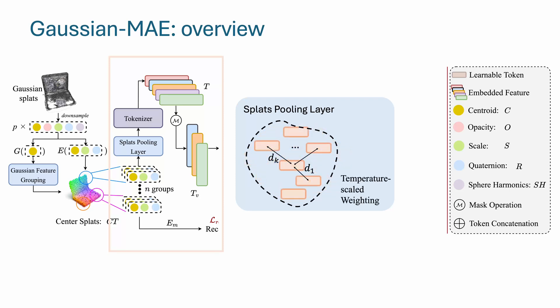we project Gaussian parameters to its intermediate feature and then use a temperature-scaled weighting mechanism, which assigns weights to the neighboring splats. The weights are used to determine how their features should be combined to a more compact one.